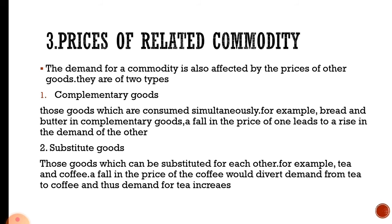Examples of complementary goods include bread and butter, pen and ink, car and petrol, lock and key, and shoes and socks. The second type is substitute goods — those goods which can be substituted for each other. Examples include tea and coffee, and bus and train. A fall in the price of coffee would divert demand from tea to coffee, and thus demand for tea falls while demand for coffee increases.